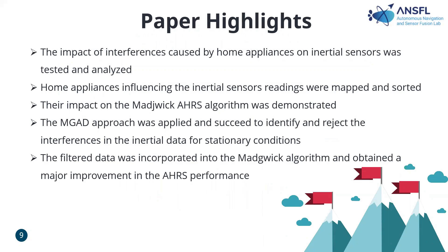In conclusion, in this paper I analyzed the impact of interference caused by home appliances on inertial sensors, and demonstrated that home appliances influence inertial sensor readings. The impact on the AHRS algorithm was demonstrated. The multivariate Gaussian anomaly detection approach was applied, and as you can see in the results, it succeeded in identifying and removing the interference in the inertial data under stationary conditions. The filtered data was incorporated into the AHRS algorithm, obtaining a major improvement in AHRS performance.